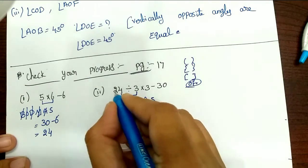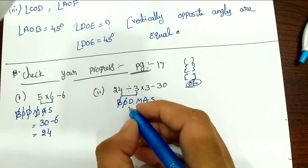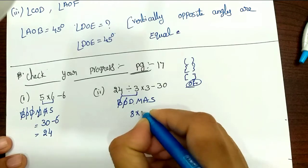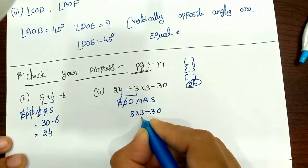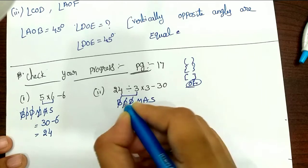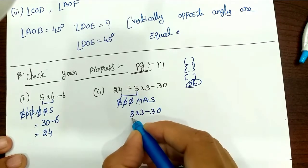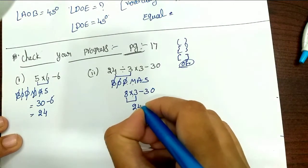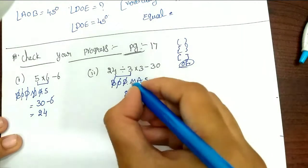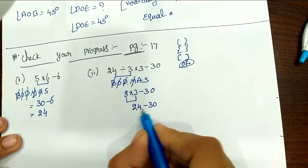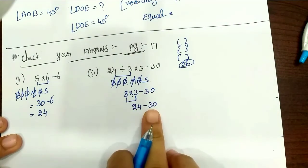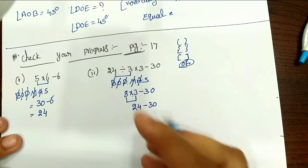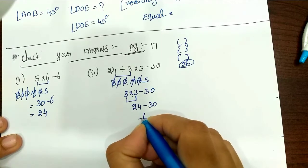Next, multiplication: 8 times 3 is 24 minus 30. Multiplication is 0 to 3. Next, addition — here is plus. Next, subtraction: minus 30 is equal to 30; 30 minus 24, subtraction is equal to 6. So minus 6 is equal to minus 6.